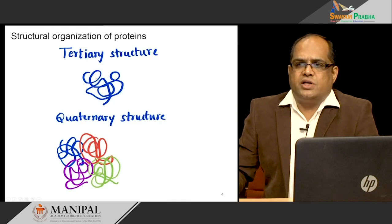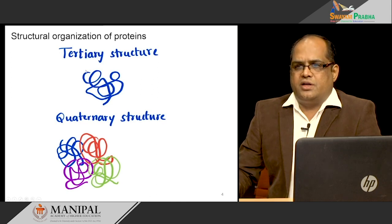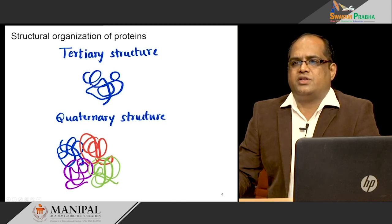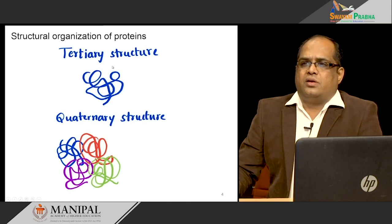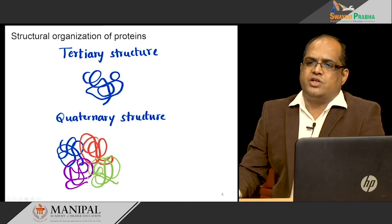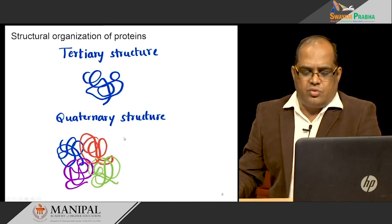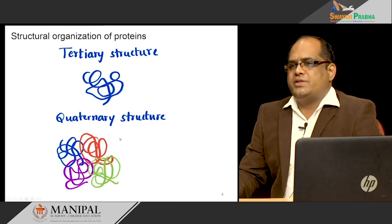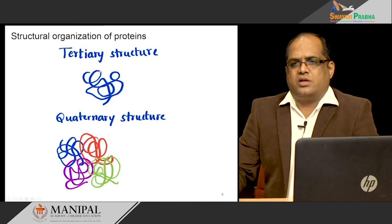The tertiary structure involves a single polypeptide chain with a further three-dimensional organization of the protein — it has a primary structure and secondary structures that together give a three-dimensional structure. For example, myoglobin gives the tertiary structure. If many polypeptide chains interact with each other and form a complex, they form a quaternary structure — example is hemoglobin. These are the four basic protein structures: primary, secondary, tertiary, and quaternary.